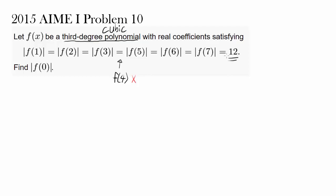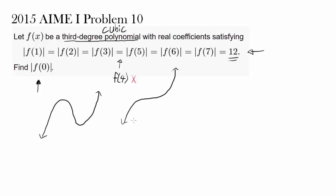So you're skipping f(4), and you're going to get 12 for all the others. We wish to find the absolute value of f(0). One of the first things that came to my mind when I looked at this question was that there are really only two ways the graph of the function can go in order for this condition to be satisfied. If you know how a cubic polynomial behaves, you know it's going to curve with at most two extrema.